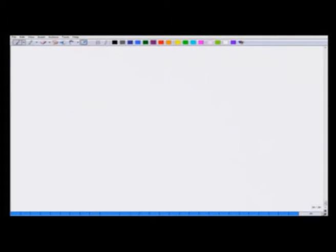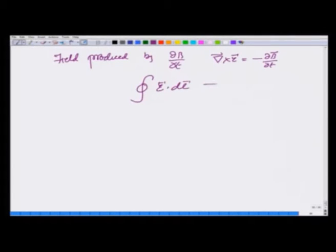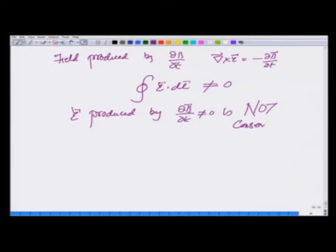Notice that because this field produced by dB by dt has curl nonzero, that means integration of E dot dl by Stokes theorem is not 0. But that we already know because E dot dl is nothing but the EMF. So this field is not conservative.